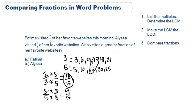So we know that whoever visited two-thirds of their favorite websites visited more than the person who did three-fifths. We'll come up to the problem and we see that Fatima visited two-thirds. Therefore, the answer is A. Fatima visited more of her favorite websites this morning.